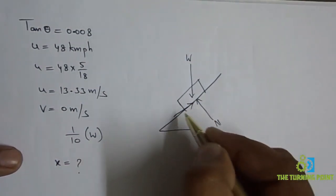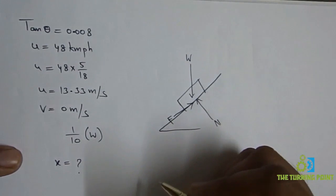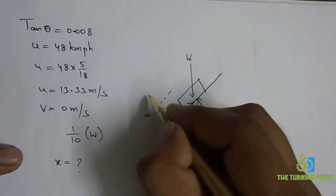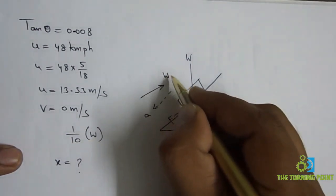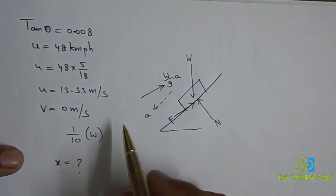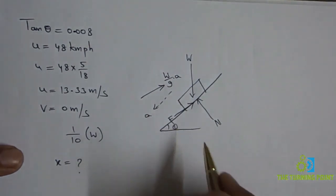That means frictional force will be in the opposite direction. F will be in this direction. It is accelerating in this direction. In the opposite direction, there will be inertia force, which is W/G × A. Here this is theta.